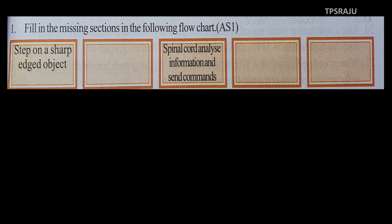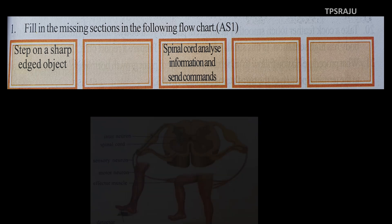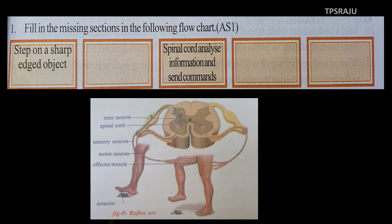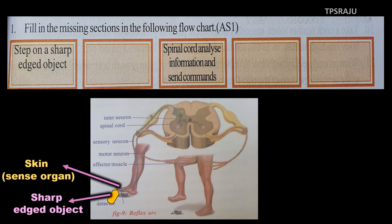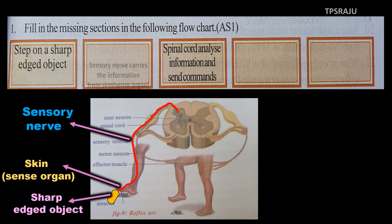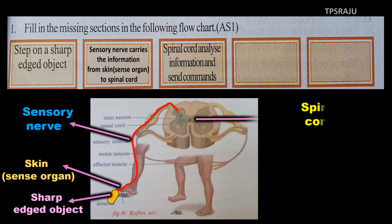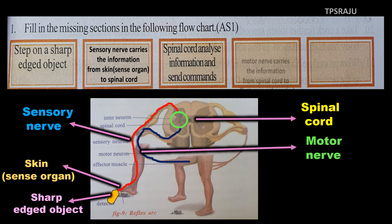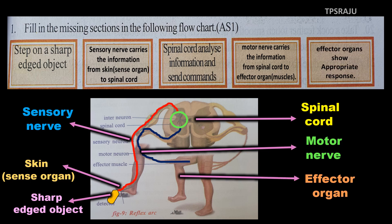This is one of the textbook questions from the fifth lesson, belonging to the reflex arc. When we step on a sharp-edged object, sensory nerve carries the information from skin to spinal cord. Then, spinal cord analyzes the information and sends commands. Then, motor nerve carries the information from spinal cord to the effector organ. Finally, the effector organ shows response.